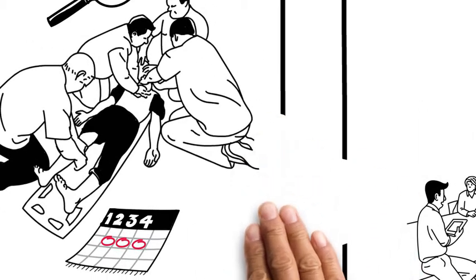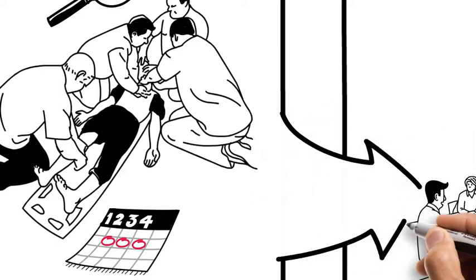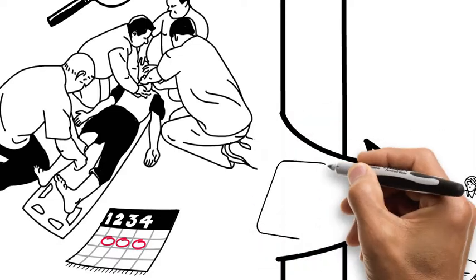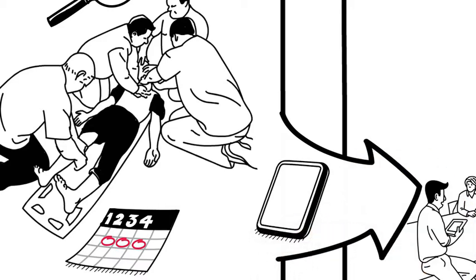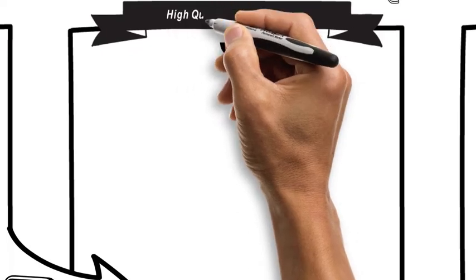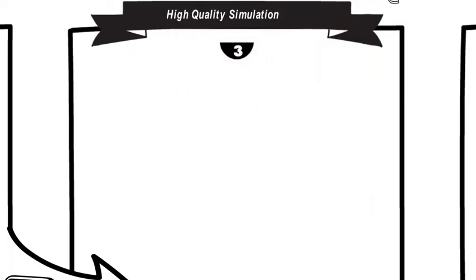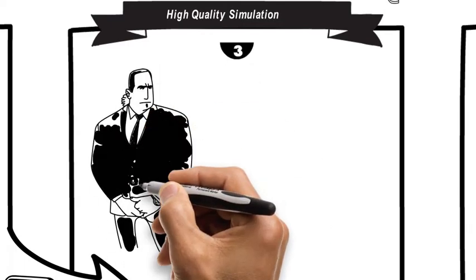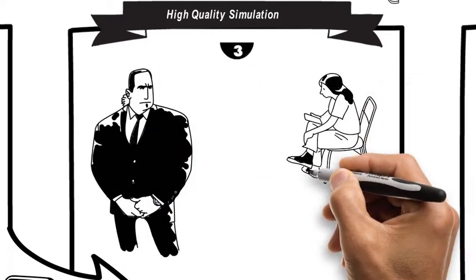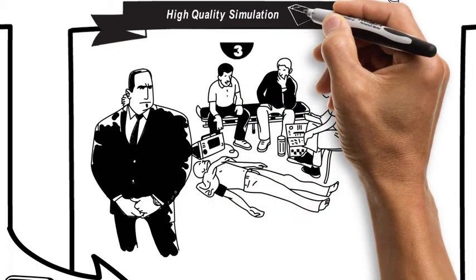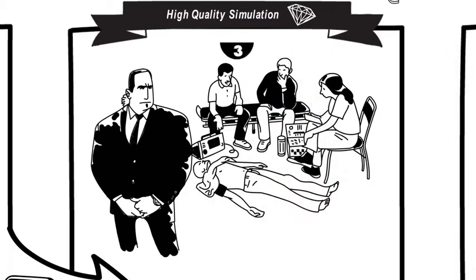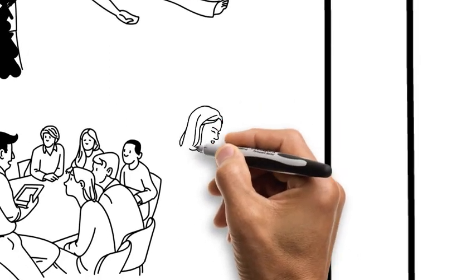When we meet again for Module 3, you will receive a pre-programmed version of the scenario that you designed in Module 2. Module 3 is focused on the delivery of a high-quality simulation. This includes creating a safe learning environment, delivering an effective preparatory briefing, delivering a high-quality simulation, and delivering an effective debrief.